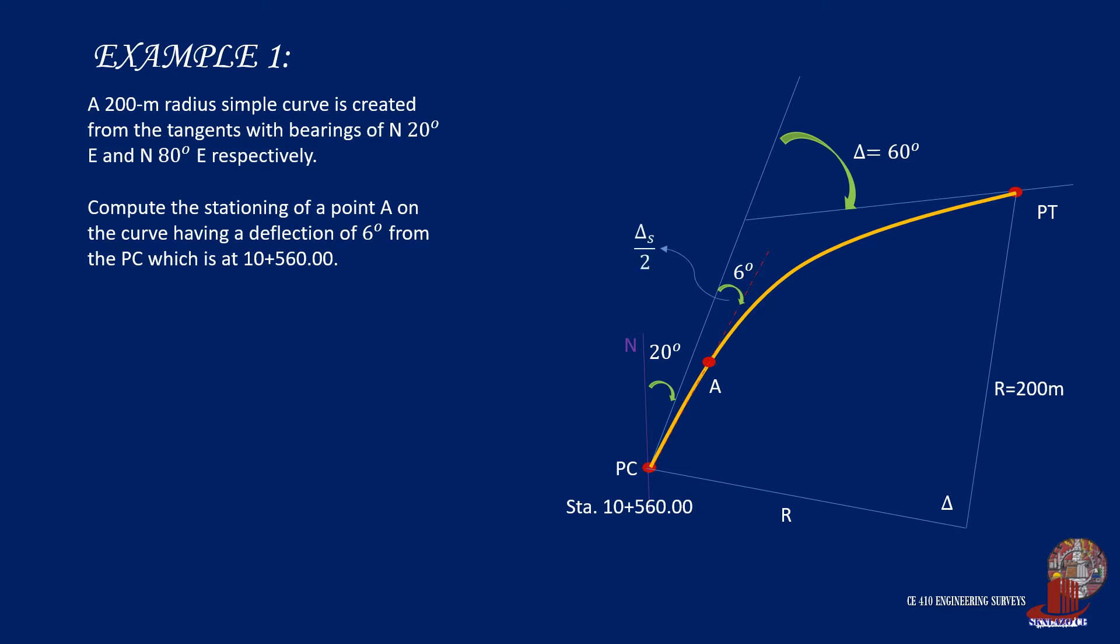Thus, we need to find the length of the curve first. From the derivation, we have seen that an angle generated from PC is actually half of the angle of the intersection from the tangent line to the long chord. So if the given angle at PC is 6 degrees, point A generates twice to the center of the curve and that is 12 degrees.